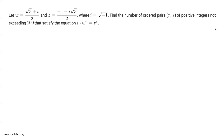Let w equal the square root of 3 plus i, over 2, and z equal negative 1 plus i times the square root of 3, over 2, where i equals the square root of negative 1. Find the number of ordered pairs (r, s) of positive integers not exceeding 100 that satisfy the equation i times w to the power of r equals z to the power of s.